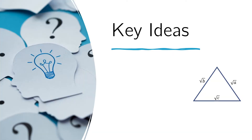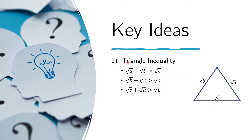Let us review some key ideas helpful in solving this problem. First is the triangle inequality. Here we have a general triangle with sides labeled √A, √B, and √C. We want to think about when a triangle is possible and when it is not. The key theorem is the triangle inequality: for any triangle, these inequalities must hold — the sum of any two sides must be greater than the third side.